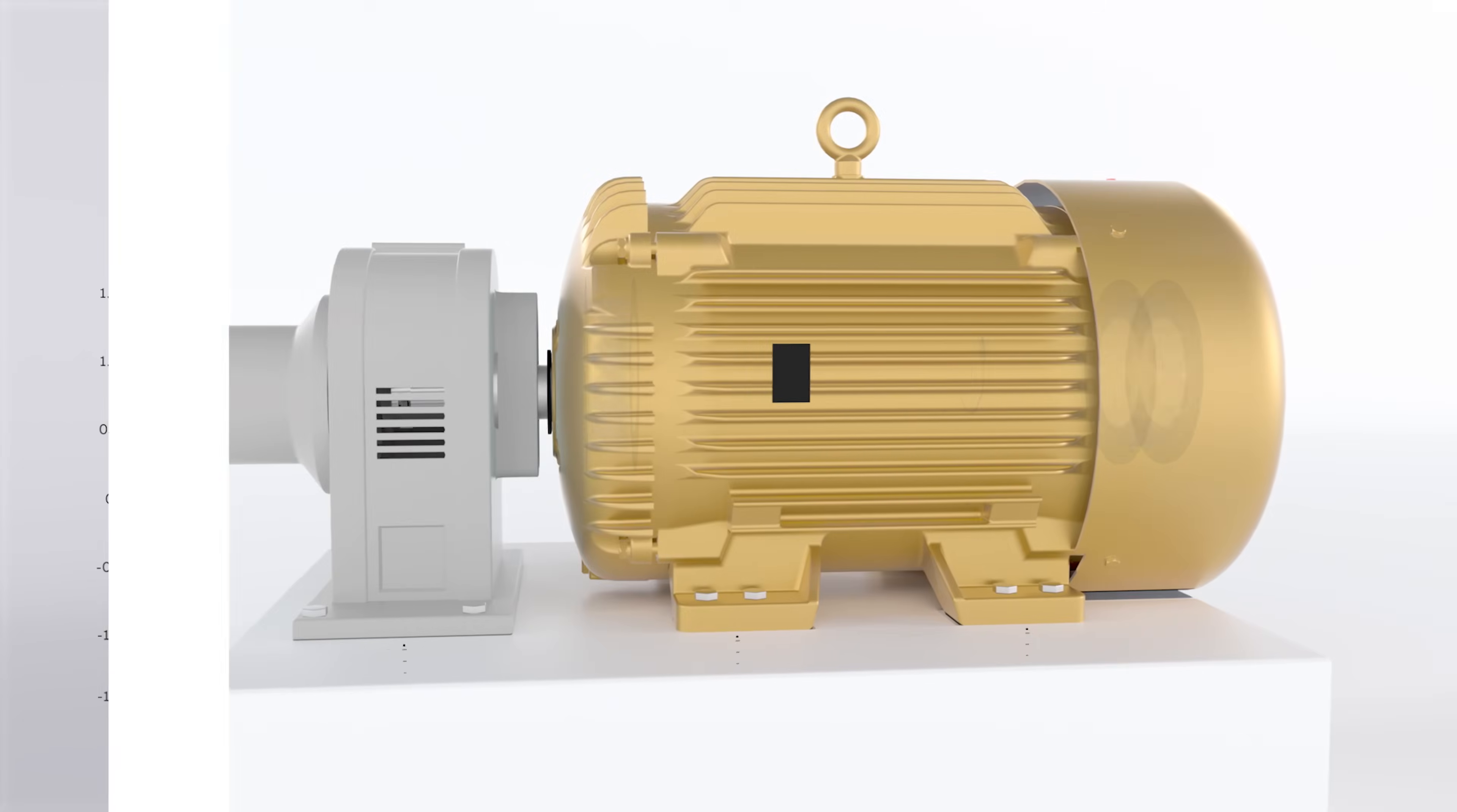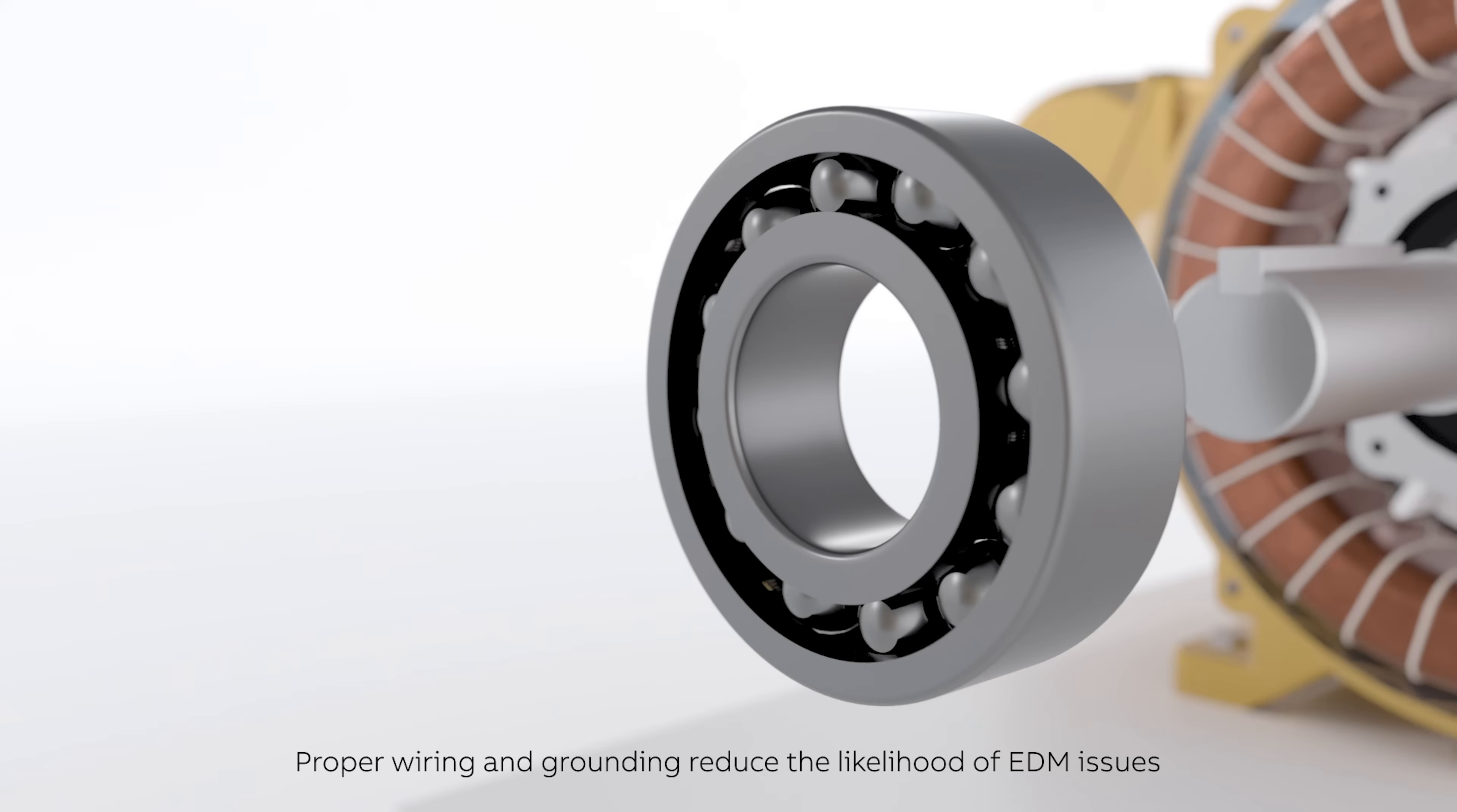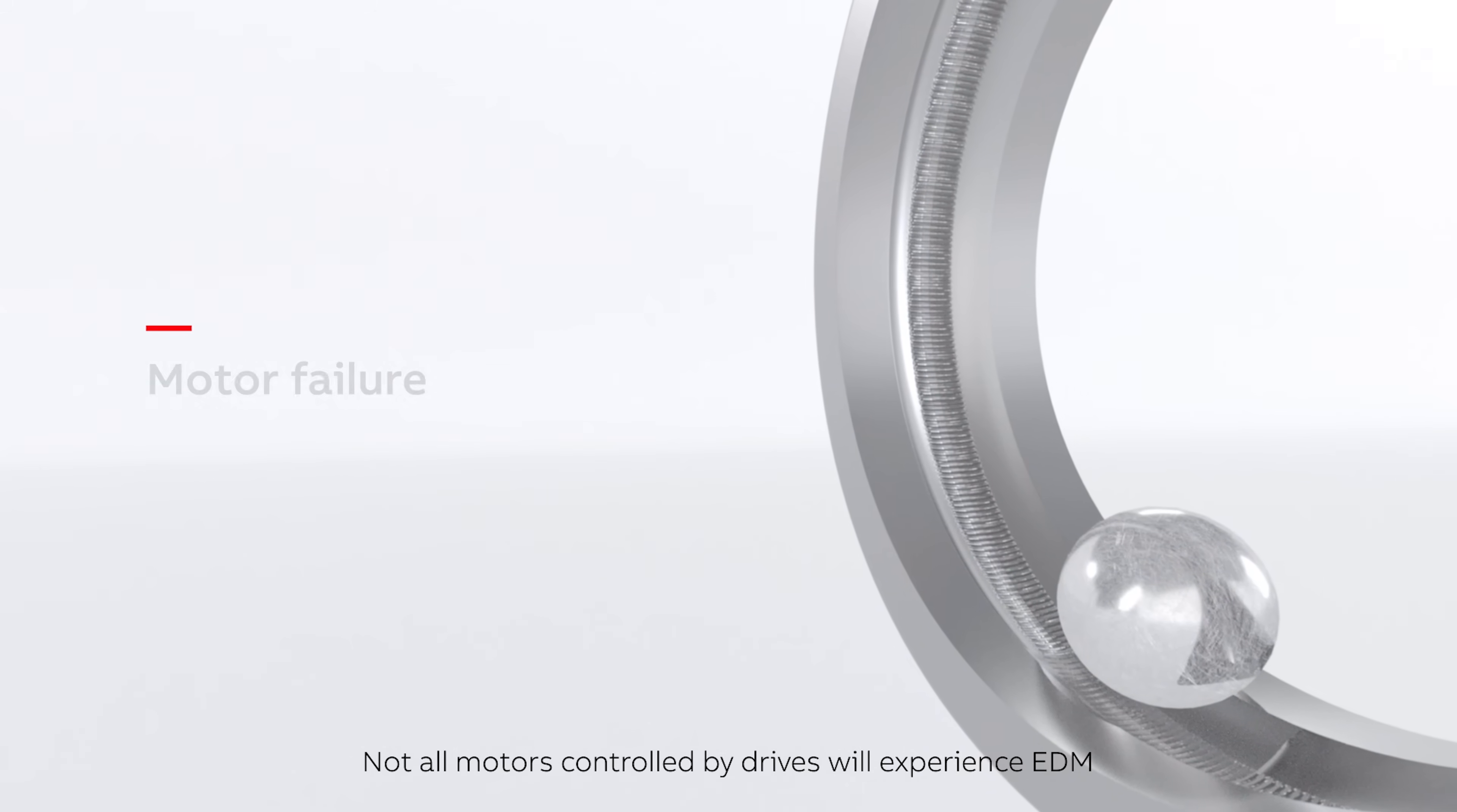Common mode voltage builds up across the bearings due to the dielectric effect on the bearing grease, and will eventually discharge through the bearings in what is referred to as EDM, or electrical discharge machining. Over time, this continual arcing will cause damage to the surface of the bearing race, resulting in vibration and heat, loud operating noises, and eventually motor failure.